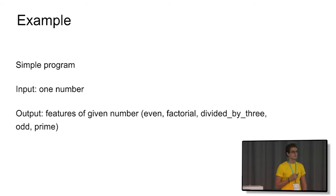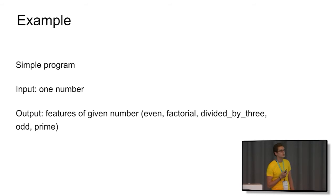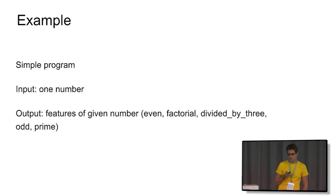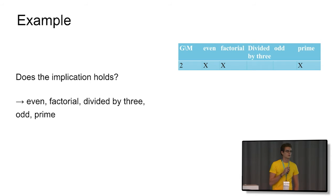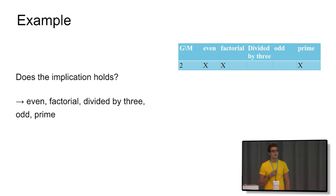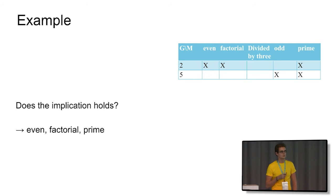To make things easier and more intuitive, let us consider an example. We have a simple program where the input is one number and the output is a set of features of that number. I took five features: even, odd, prime, factorial, and whether the number is divisible by three. The attribute exploration procedure starts by asking whether some implications are true or false. For example, it asks: is it true that all numbers share all the features from the given set? I must provide a counter-example — I take the number two and describe it: even, factorial, not divisible by three, prime.